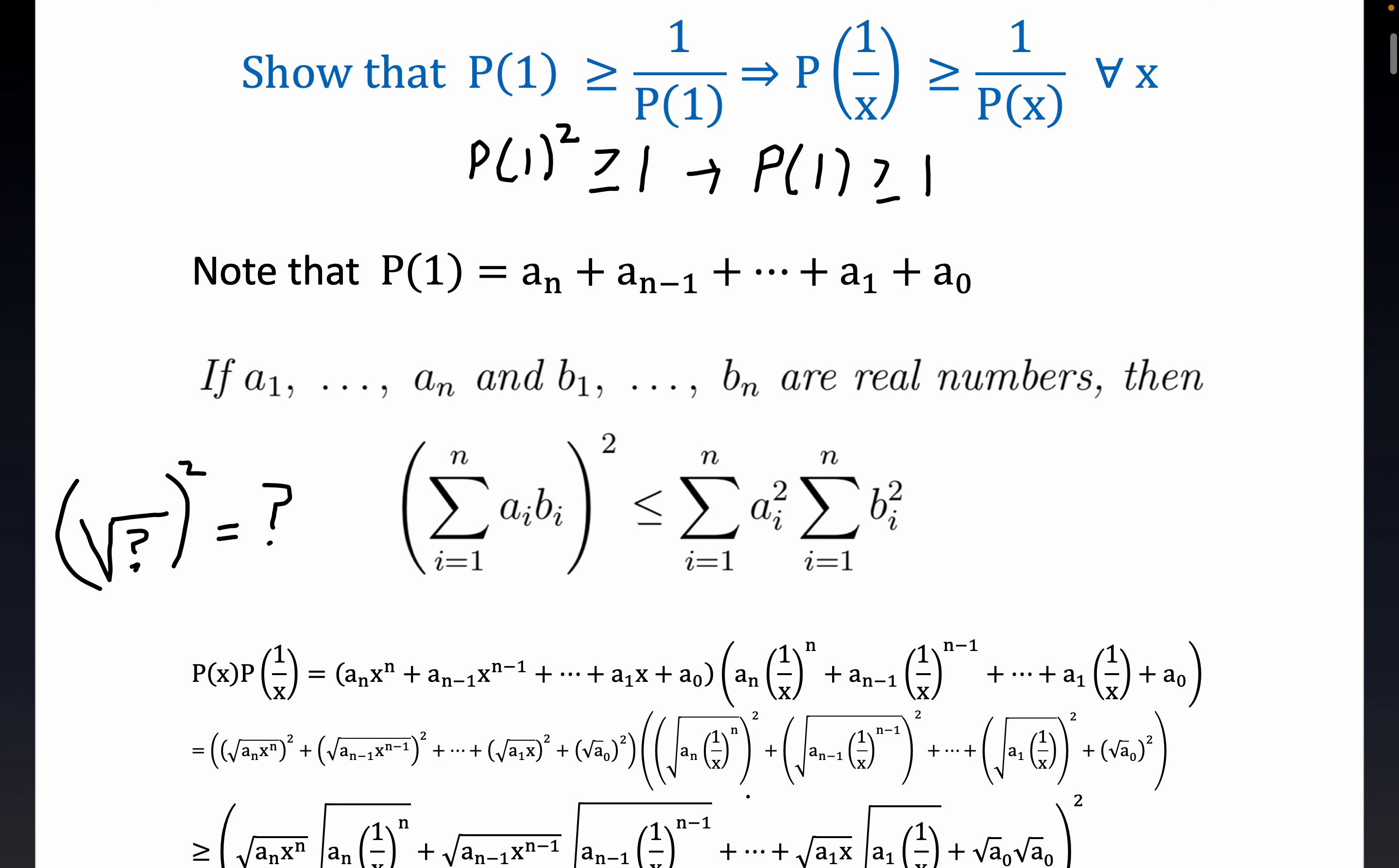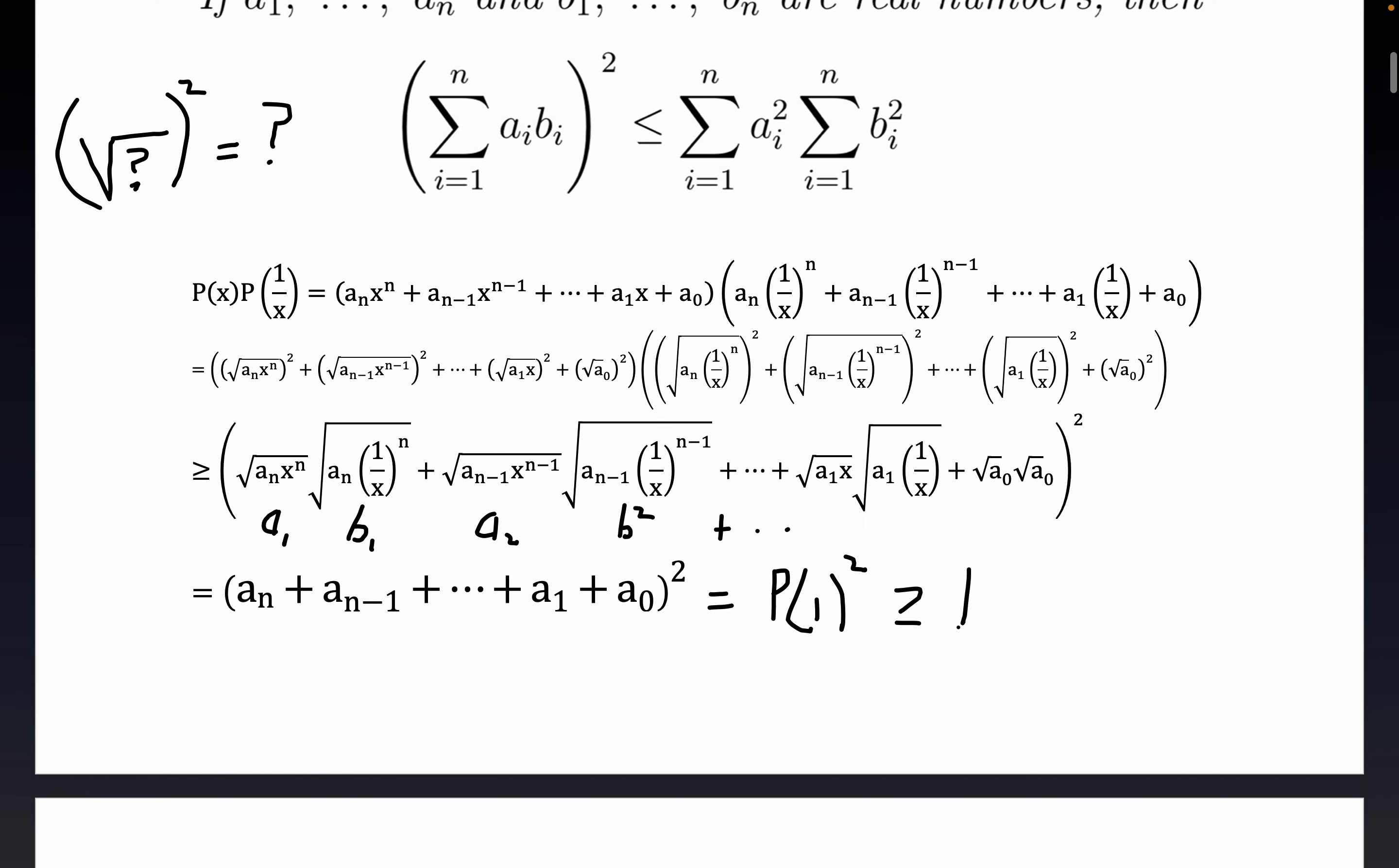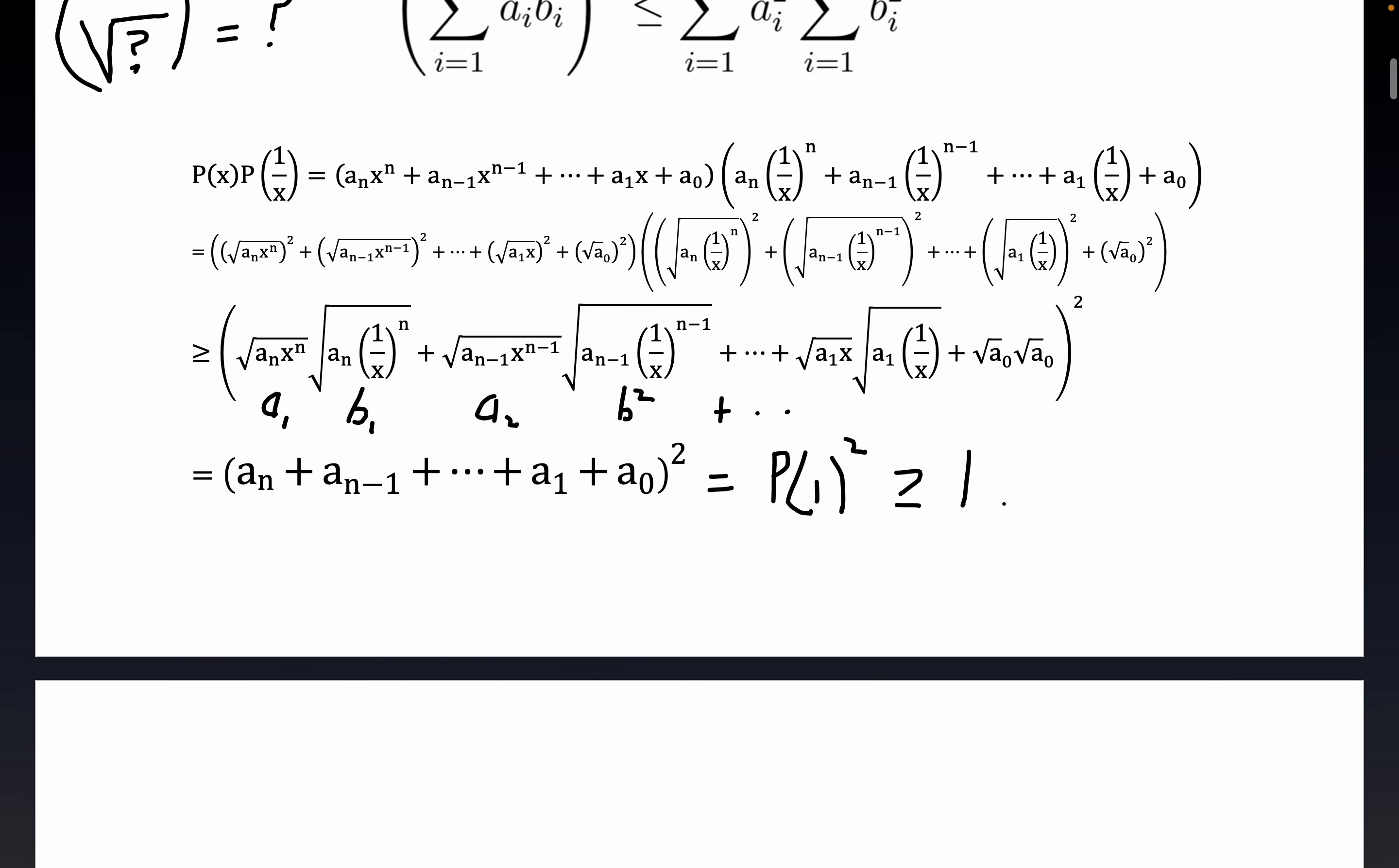Since we know that P of 1, P of 1 is the sum of the coefficients, we also know that P of 1 is greater than or equal to 1. So this would be equal to, I'll just write it out here, this would be equal to P of 1 quantity squared. But that's greater than or equal to 1. And so what we have here is a very nice circumstance. What are we trying to prove? We're trying to prove that P evaluated at 1 over x is greater than or equal to P 1 over P of x, 1 over the polynomial. And so you can see right here, we get it really quick.